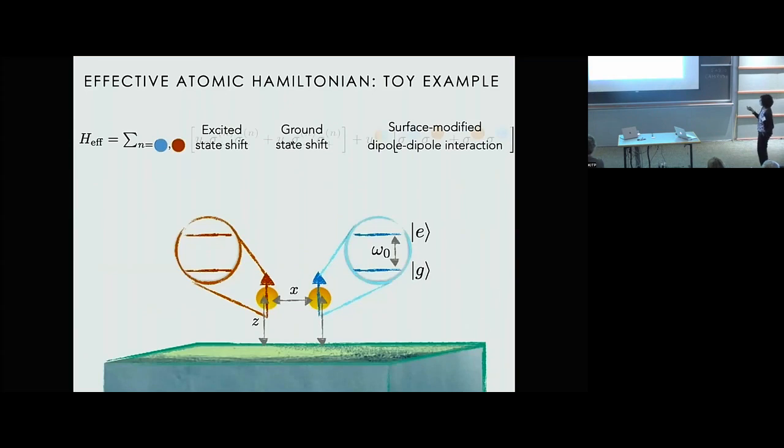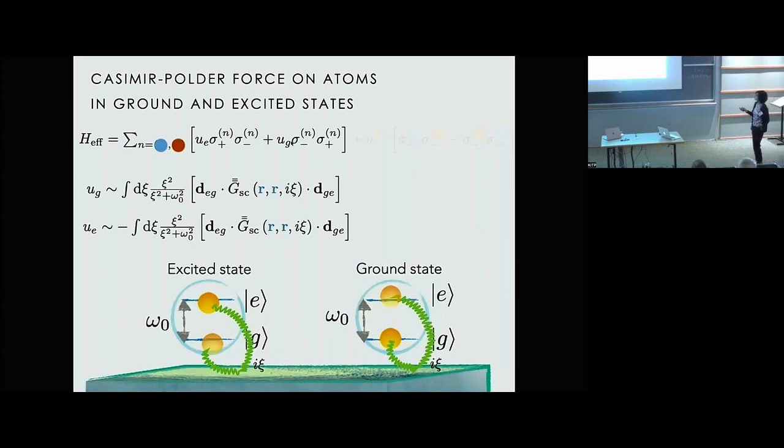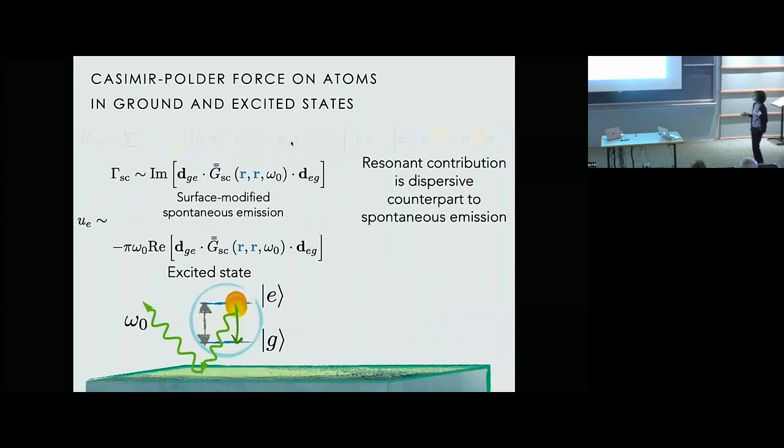Okay, so considering, let's say a toy example of two atoms, a red atom and a blue atom, we can write the effective Hamiltonian, which looks something like this, where we have some excited state shift on each of these and some ground state shift. And then there's a surface modified dipole-dipole interaction. And when we look at the excited and ground state shifts, we know that these come from the typical virtual photon scattering processes, where the atoms go up and down, scatter a photon off of the surface, and they look like that. And in addition to this contribution, the excited state also has a resonant contribution, which is due to scattering a resonant photon at the transition frequency and reabsorbing that. And if you look at this resonant shift, you can see that this is exactly the dispersive counterpart to the surface modified spontaneous emission. So this quantifies the intuition that we started with.